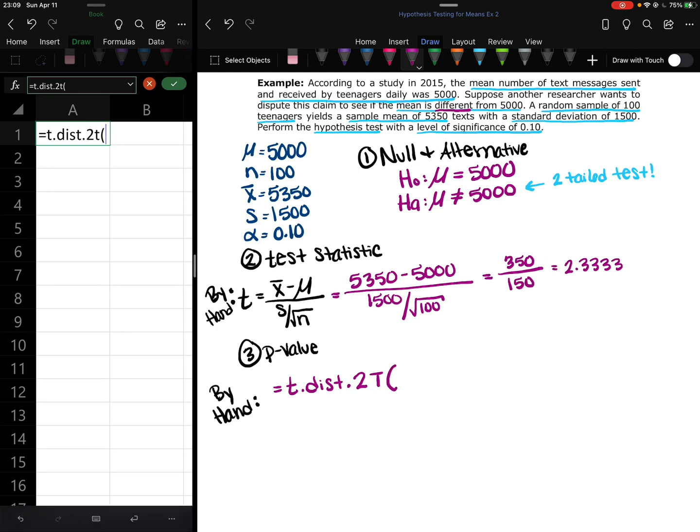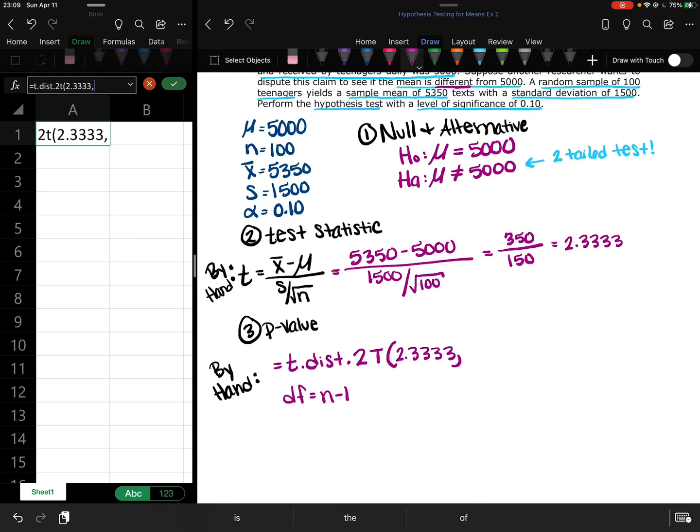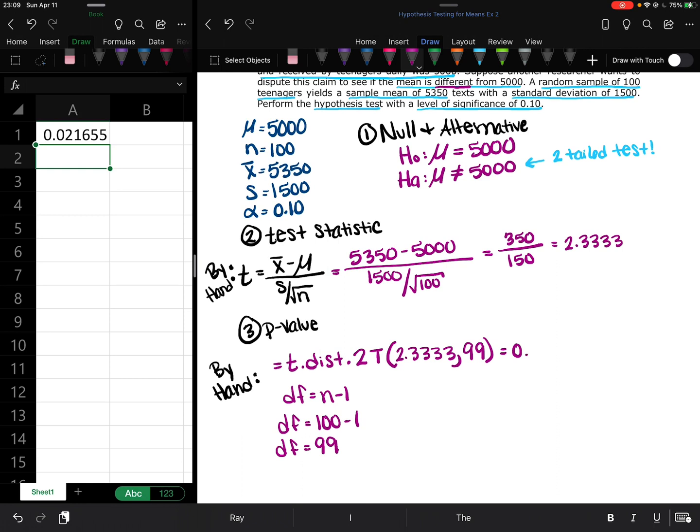Now, the first thing I'm going to enter is the t-score, 2.3333, comma, and then the second thing we want to give it are the degrees of freedom. So remember, the degrees of freedom is equal to n minus 1. So our n was 100. That means our degrees of freedom is 99. And that tells Excel which t-distribution to use. And we hit enter, and we get 0.0217.